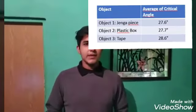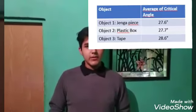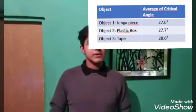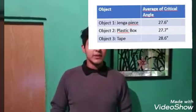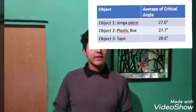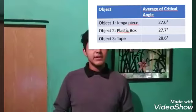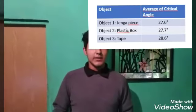This is to obtain the average of the critical angle. In object 1 the critical angle was 27.6. In object 2 the critical angle was 27.7. And in object 3 the critical angle was 28.6.